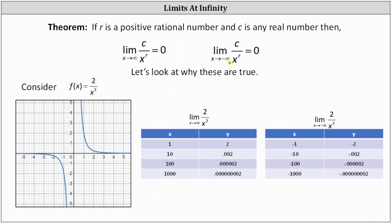As an example, consider f(x) = 2/x³. Looking at the graph, as x approaches infinity we move right along the graph, and we can see the function values (y values) approach zero as we approach positive infinity. Similarly, moving left along the graph — as x approaches negative infinity — the y values also approach zero.